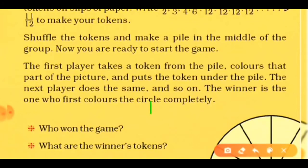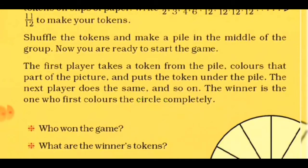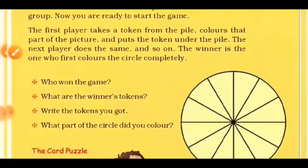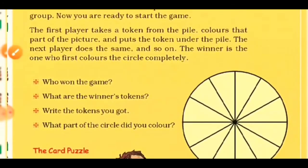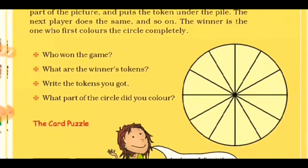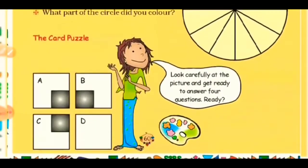For example, if a player picks up the 1/2 token, they will quickly fill one-half of the whole circle. Similarly, the second, third, and fourth players pick tokens and color the corresponding parts. The one who completes coloring their portions first will be the winner. That's how this game is played.